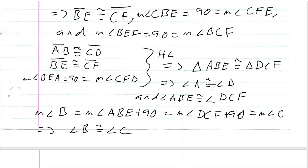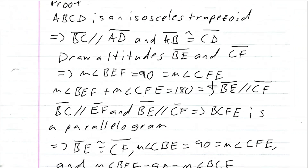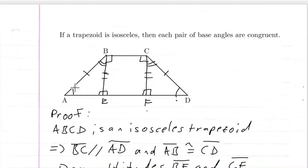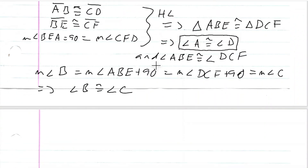So we showed that this pair of base angles — angle A congruent to angle D — and this pair of base angles — angle B and angle C — are congruent. So we proved what we set out to do.